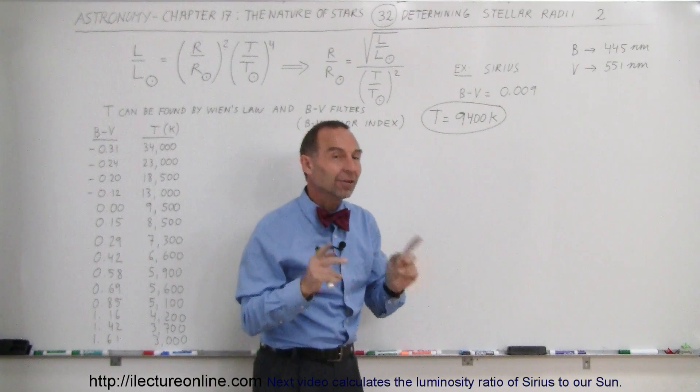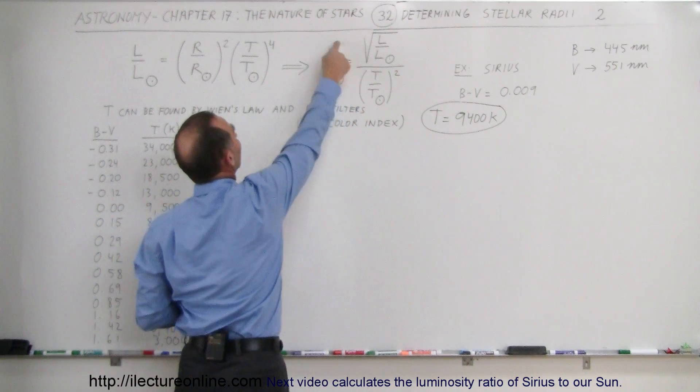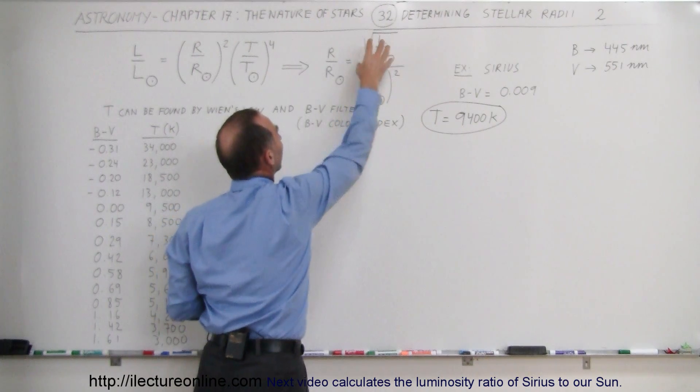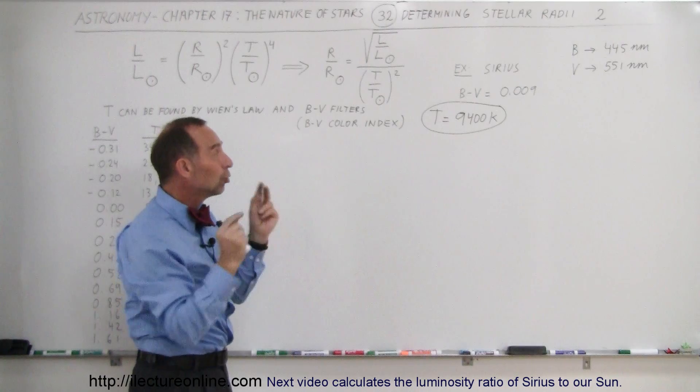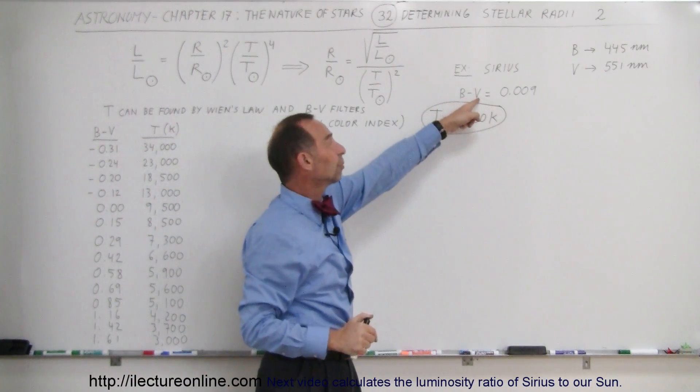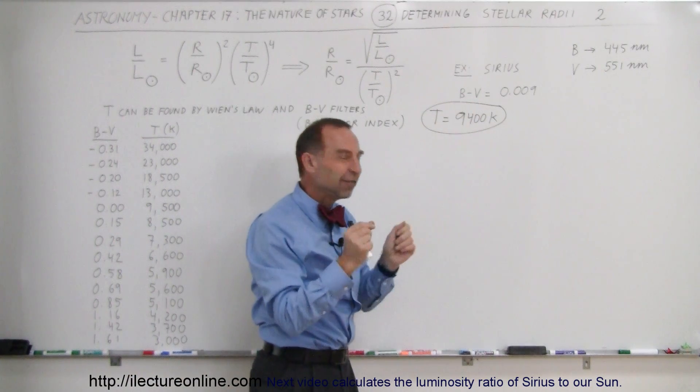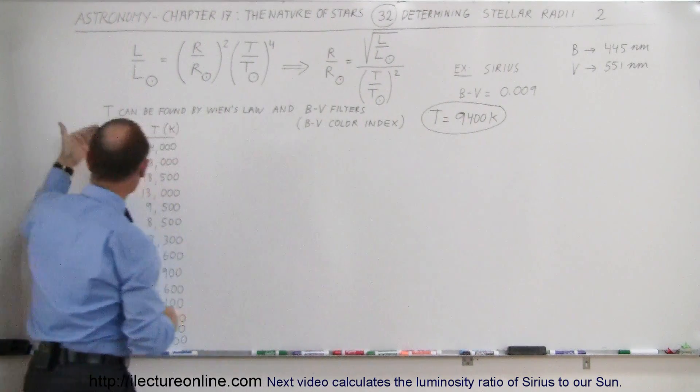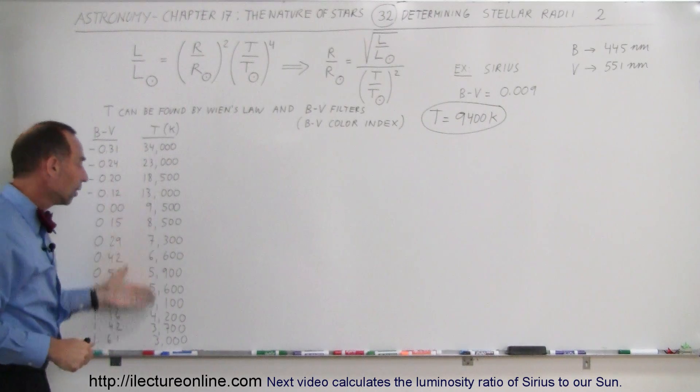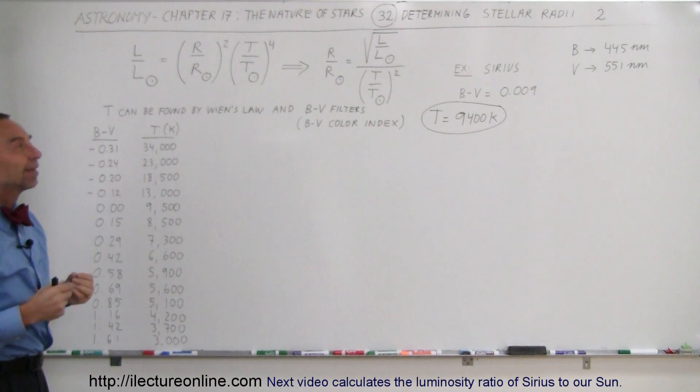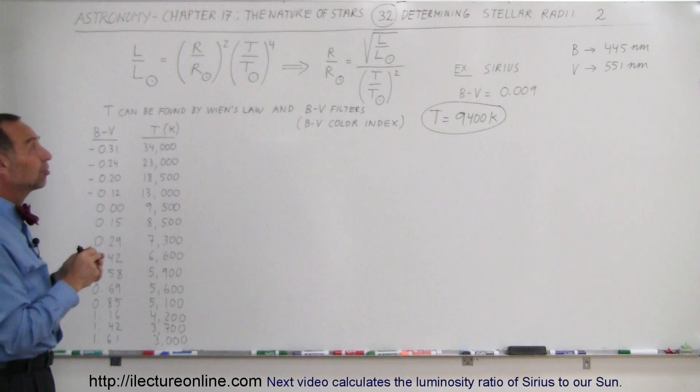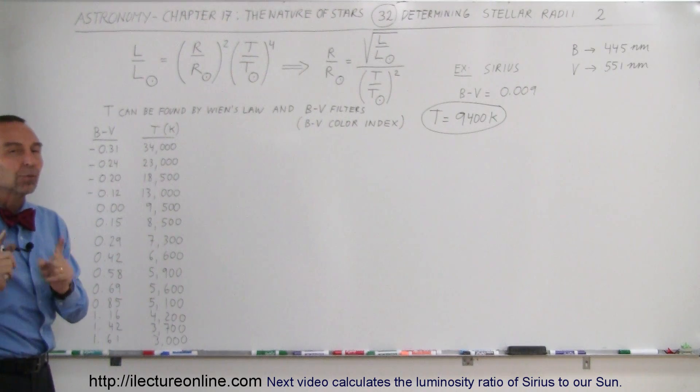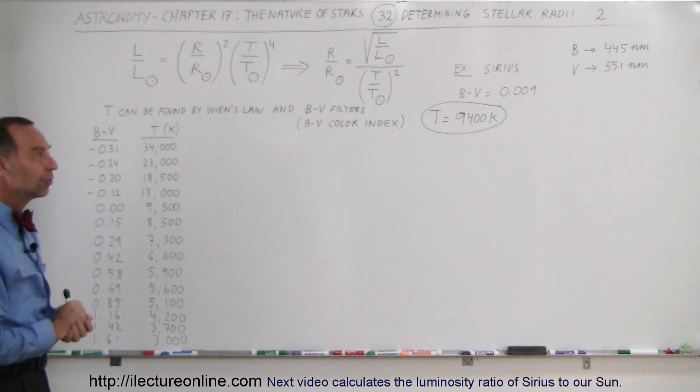Now that we know that, we have one piece of the puzzle in figuring out the radius of a star. We need to know the temperature and the luminosity. The temperature can be measured by looking at the star with two different filters, the blue filter and the visible light filter. We subtract one measurement from the other as far as the magnitude is concerned, and then we look on the table to see how hot that star is on the surface. The next portion is to find out how to find luminosity in an independent fashion, and that we'll see on the next video.